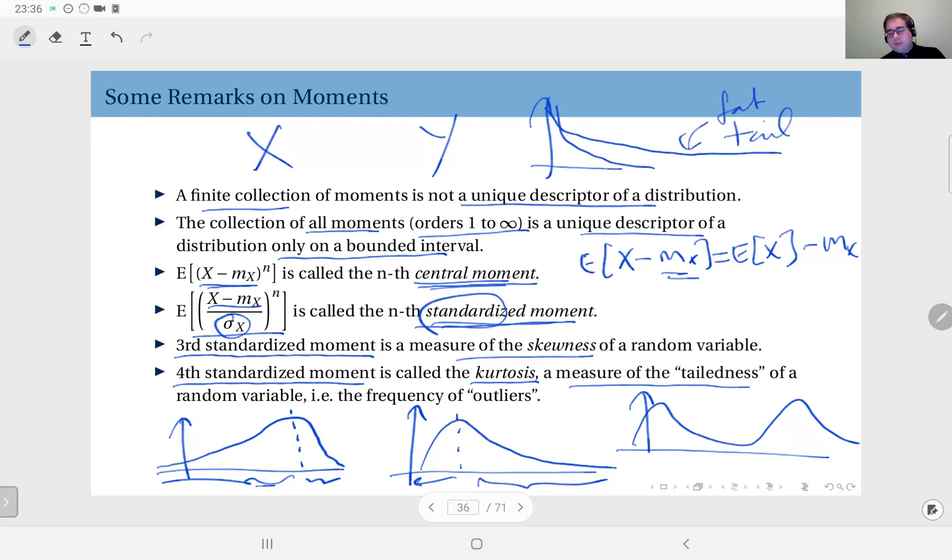This has to do with outliers. How frequently do you see an outlier? That means, how frequently do we see an outcome that sort of has a very low probability, but you see it nonetheless. If you have a fat tailed distribution, you would have more outliers occurring. So the fourth standardized moment is a measure of that.